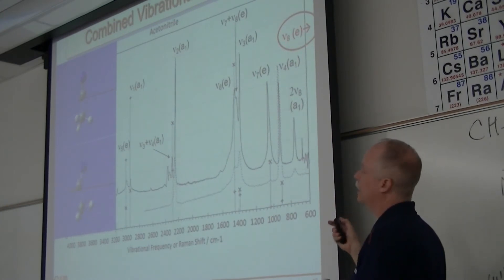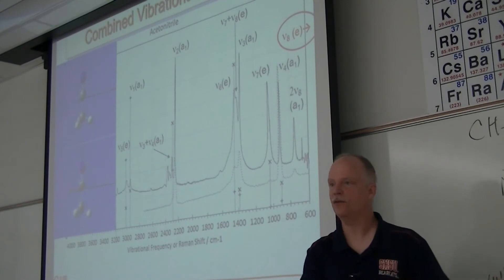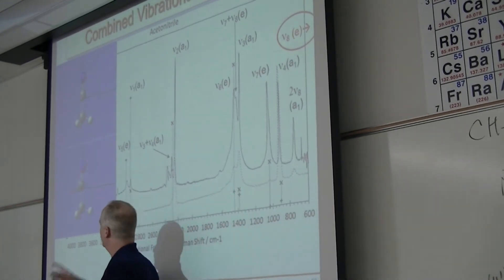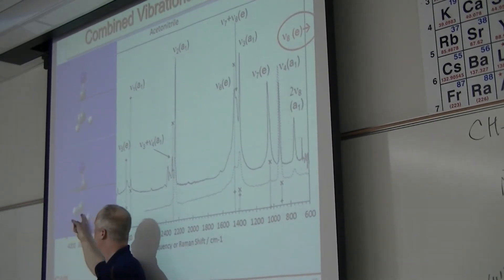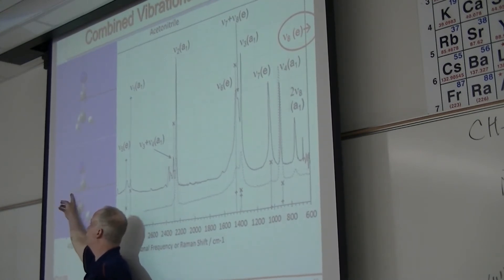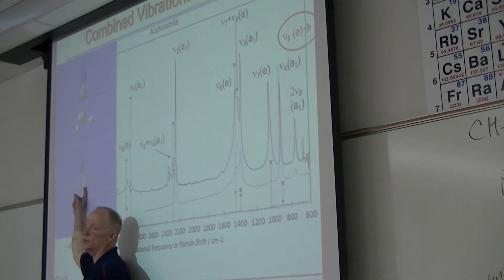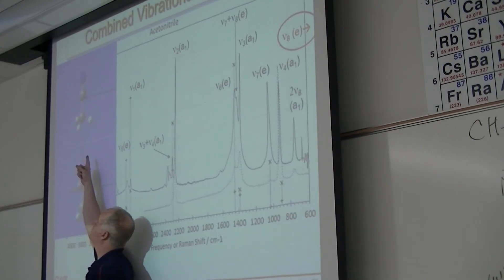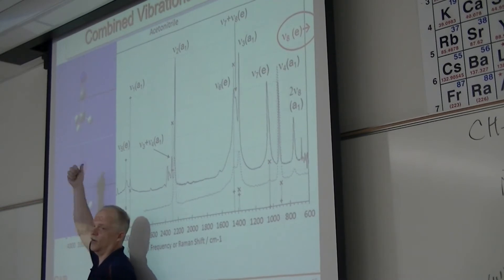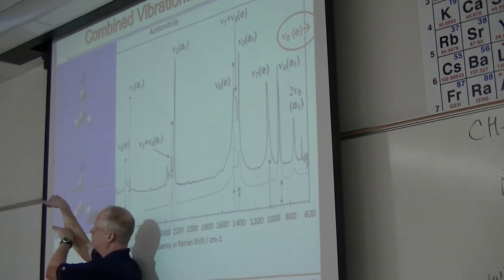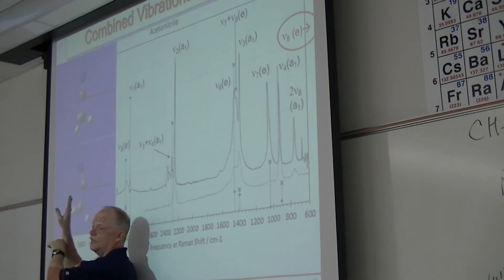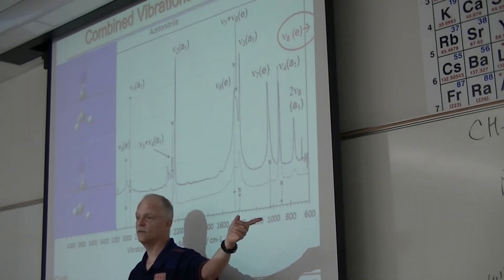ν₈ is a doubly degenerate mode — one in the x direction, one in the y direction. The yellow vector shows the change in the dipole moment: the dipole changes along y, so y-polarized light would excite this motion; x-polarized light excites the other. This is really low frequency — 360 wavenumbers — because it's the bending of the nitrile group. The spring keeping the molecule straight is really weak, giving a low frequency.